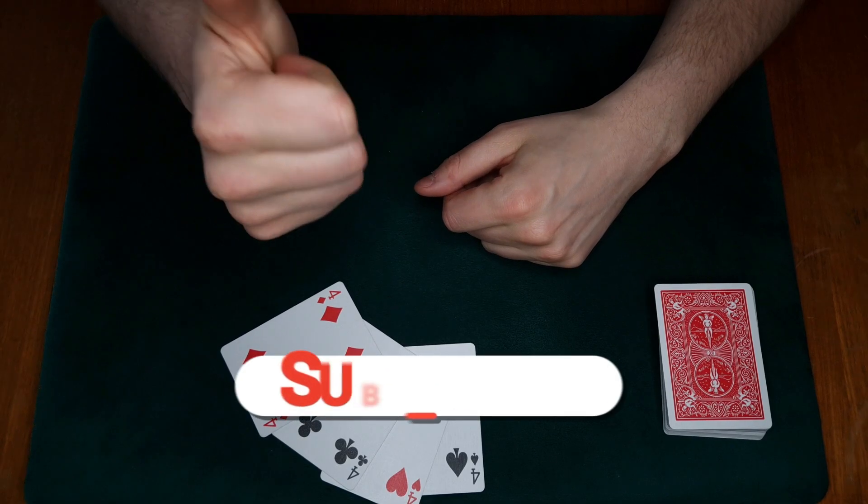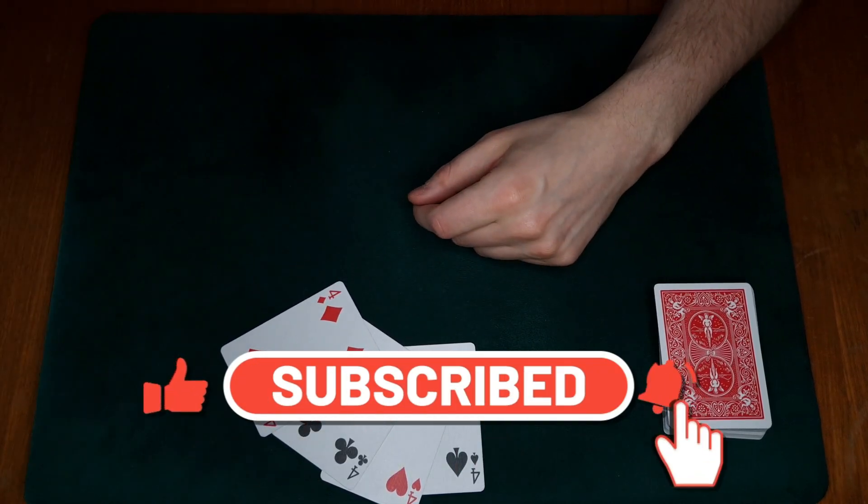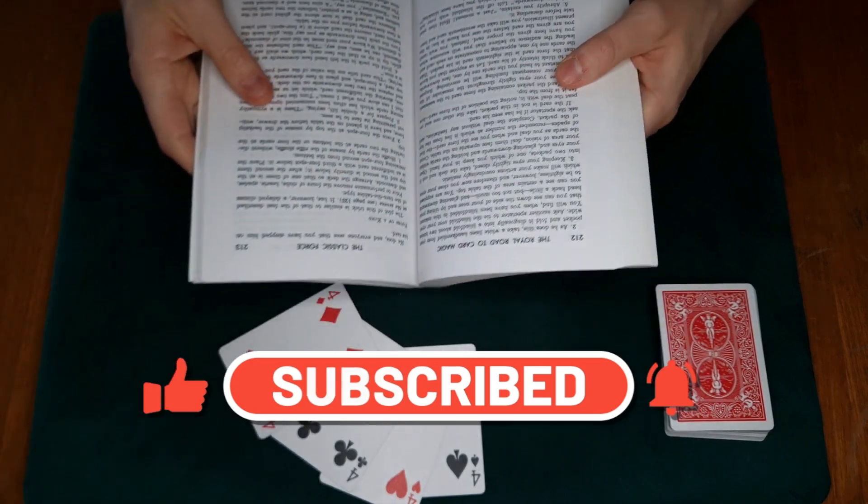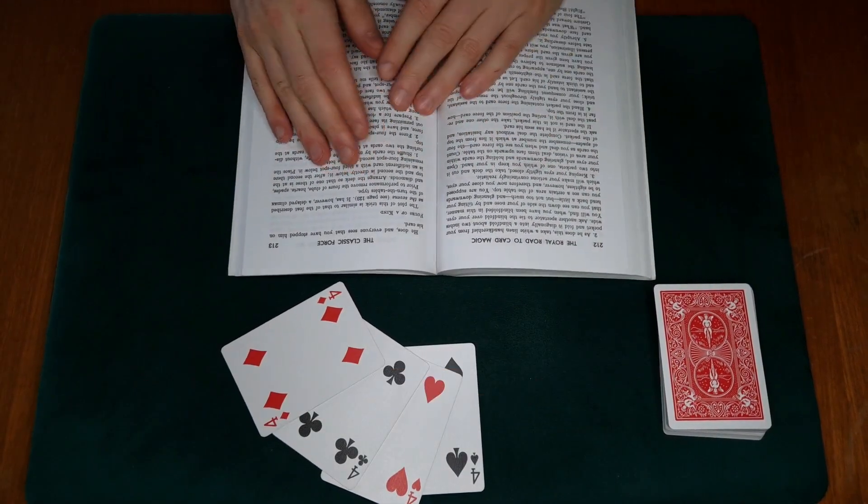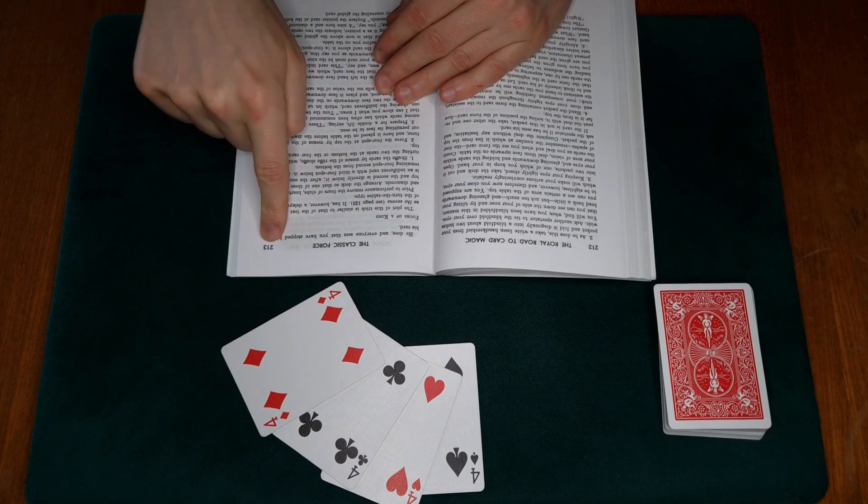Okay, let's learn this trick guys. If you enjoyed that trick please like the video and subscribe, and now let's learn it. This trick is another one from the Royal Road to Card Magic. It's in the fourth chapter, we're talking about forces right now, and it's called Force of a Kind and it's on page 213.